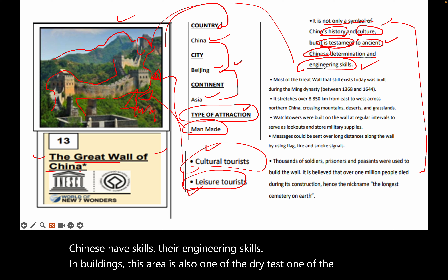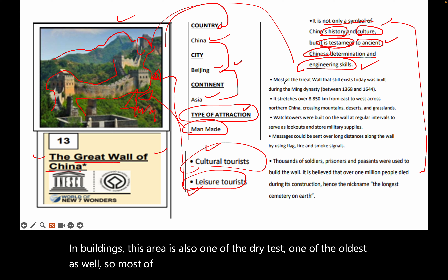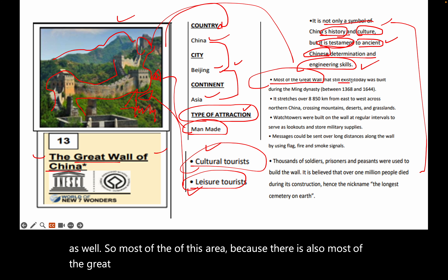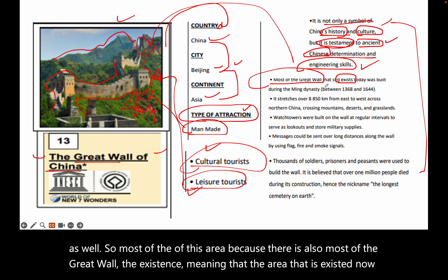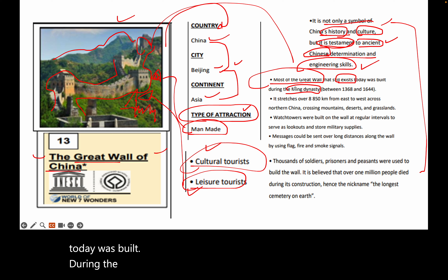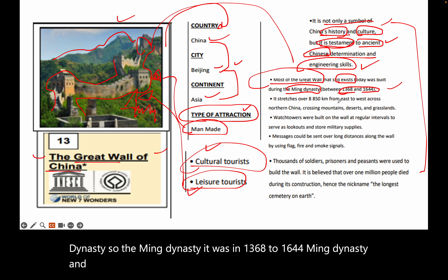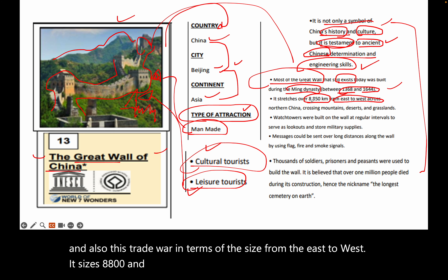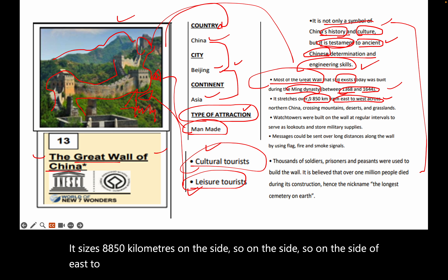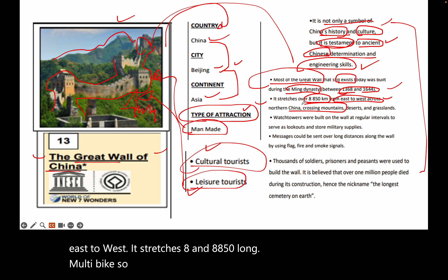Most of the wall that exists today was built during the Ming Dynasty. The Ming Dynasty period was from 1368 to 1644. In terms of size, from east to west the wall stretches 8,850 kilometers. It crosses mountains, deserts, and grasslands from east to west.